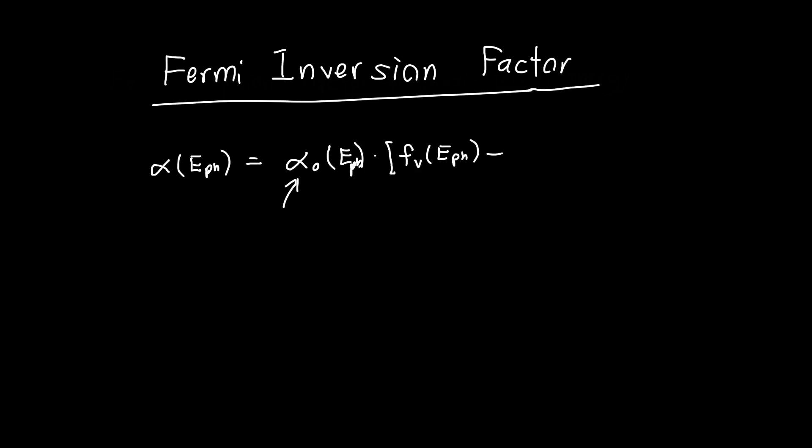So Fv, the Fermi factor for the valence band, minus Fc as a function of photon energy, the Fermi factor for the conduction band. Collectively, this thing is known as the Fermi inversion factor.